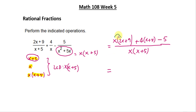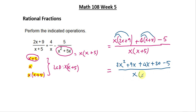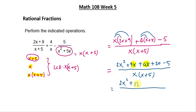Now we distribute and simplify the numerator. x times 2x gives 2x squared, x times 9 gives 9x, 4 times x gives 4x, and 4 times 5 gives 20, minus 5. Combining like terms: the squared term is just 2x squared, the x terms give 9x plus 4x equals 13x, and the constants give 20 minus 5 equals 15. So the numerator is 2x squared plus 13x plus 15, all over x times x plus 5.